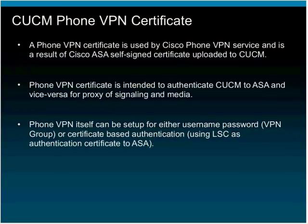The phone VPN certificate is leveraged by endpoints which have a built-in phone VPN client, like the 79XX series, the 89XX, and 99XX. Depending upon the type of endpoint, you can browse to Settings, Security, and from there initiate a VPN connection built into the phone via the AnyConnect VPN client.